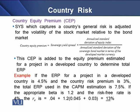For example, if the equity risk premium for a project in a developed country is 4.5% and the country risk premium is 3%, then the total equity risk premium used in the CAPM estimation is 7.5%. With an appropriate beta of 1.2 and a risk-free rate of 4%, the cost of equity (RE) using the CAPM model comes to 13%.